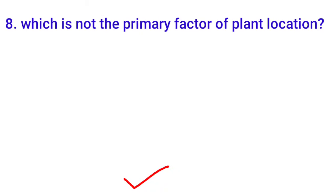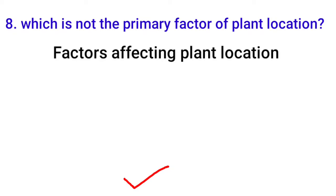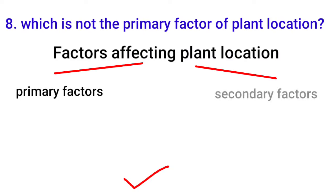Next MCQ: 'Which is not a primary factor of plant location?' This is an important concept. When selecting a plant location — the place where the business is set up — many factors are considered. Primary factors are the main ones: labor availability, raw materials, climate, transportation, and power and fuel. Secondary factors include government policies, legal structure, and owner's personal interests.